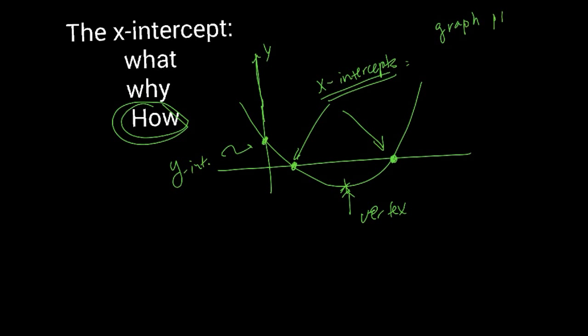The vertex is the lowest part or the highest part if the curve happens to be turned up or down. Of course, to graph this curve, we can do a point by point, but boy, wouldn't that be tedious?